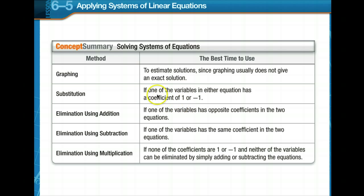Substitution: you'll use substitution if one of the variables in either equation has a coefficient of 1 or negative 1. You will use elimination by addition if one of the variables has opposite coefficients in the two equations. You'll use elimination by subtraction if one of the variables has the same coefficient in the two equations. And then you'll use elimination by multiplication if none of the coefficients are 1 or negative 1, and neither of the variables can be eliminated by simply adding or subtracting the equations.